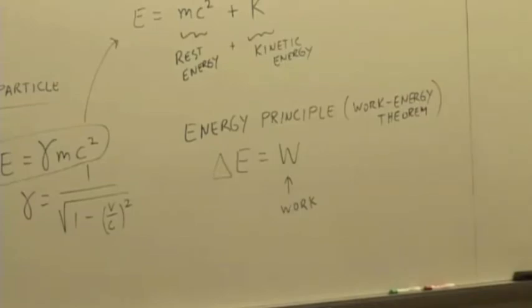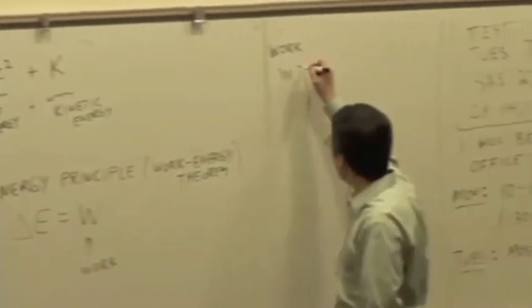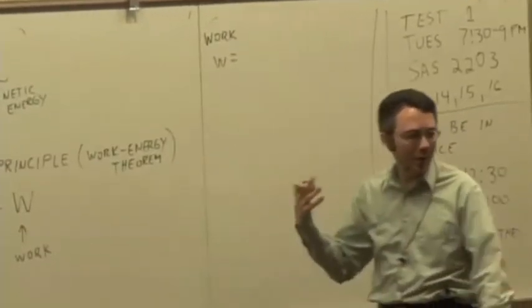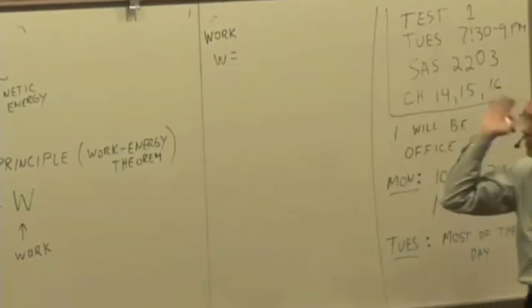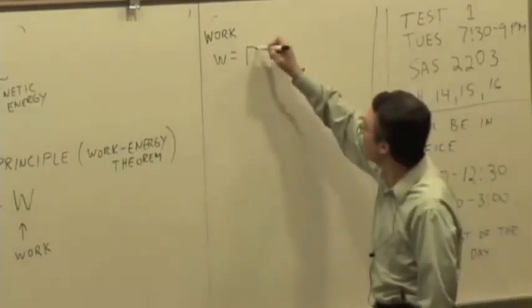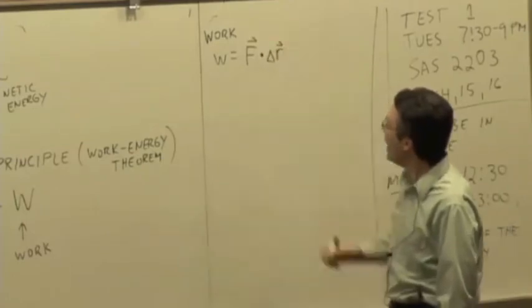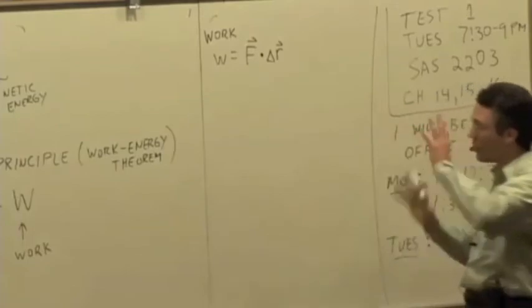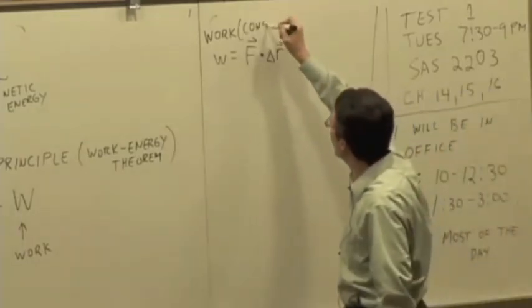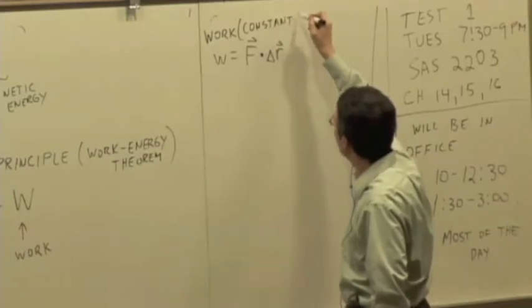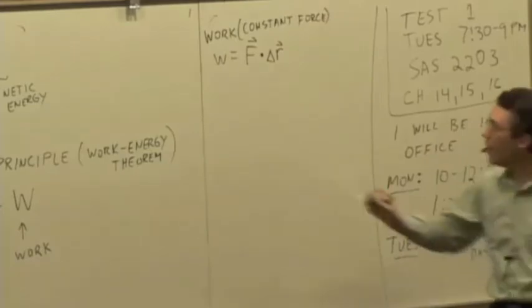What's work? Work is defined to be force times distance. How do we multiply the force with the distance? It's a dot product. Dot product of F, the force and the displacement. This is just for a constant force. For a constant force, F dot delta R.